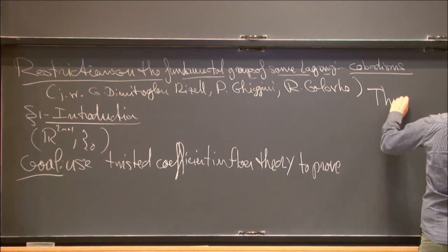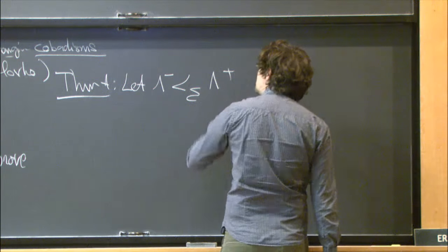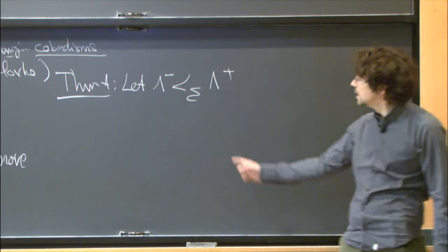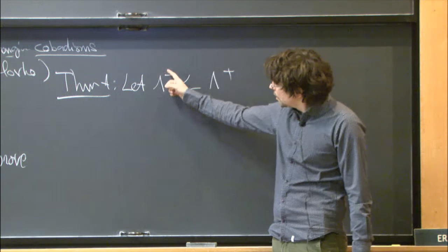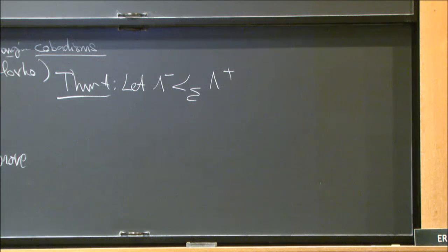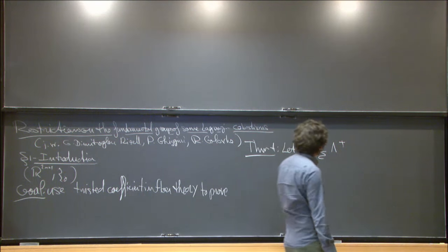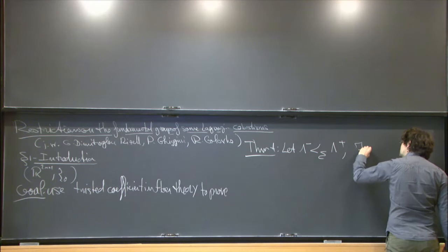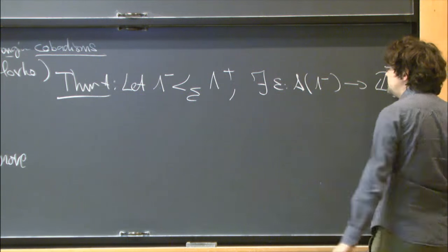First theorem. Let Σ be an exact Lagrangian Cobordism from λ⁻ to λ⁺. Σ is a Lagrangian in the symplectization; at minus infinity it looks like the cylinder over the Legendrian manifold λ⁻, and at plus infinity like a cylinder over λ⁺. In between you have something compact. I also assume that the Chekanov-Eliashberg algebra of λ⁻ admits an augmentation.